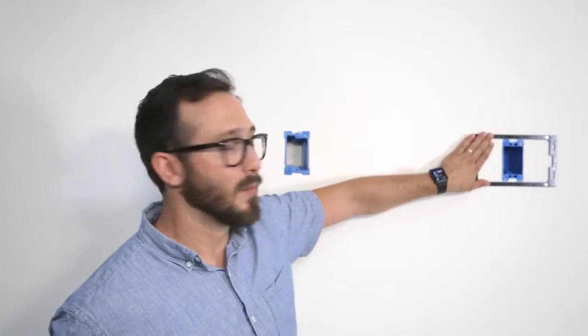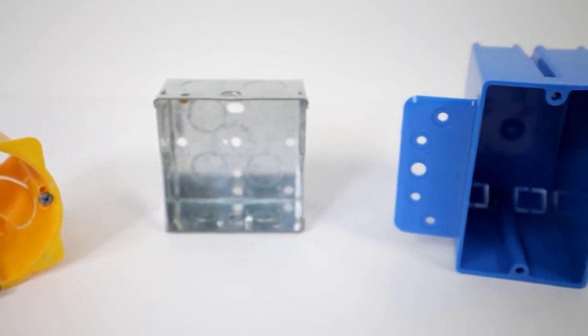Simply take the mounting brackets, position it around the wall box, and attach it to the wall using our specialized anchor screws. Surface Mount is able to use any electrical box worldwide.